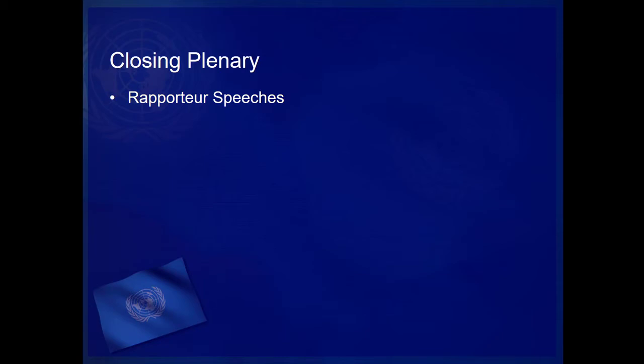At that session, it hears from the rapporteurs, or the elected representatives, from each committee, who report back to the General Assembly on the work of each committee. The General Assembly then considers what to do with the report and the resolutions passed by each committee at conference.